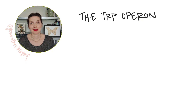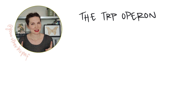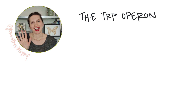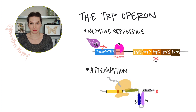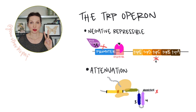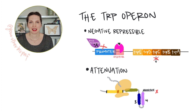You'll often see operons used as models for prokaryotic gene regulation, and especially this one because it's a little bit different. Hi, biology friends. It's Sarah, your other biology professor, and let's talk about the trp operon. Expression of the tryptophan, or trp operon, is regulated by two different mechanisms: a classic negative repressible mechanism, and by attenuation, and we'll look at both in this video.